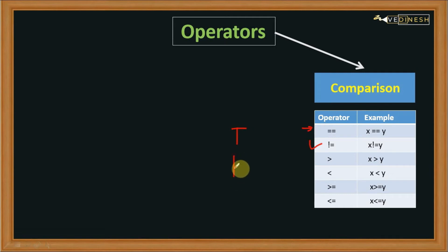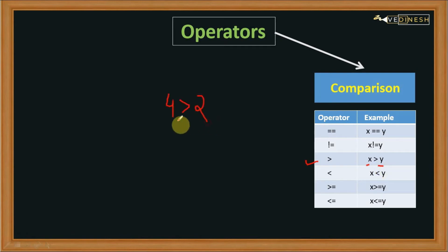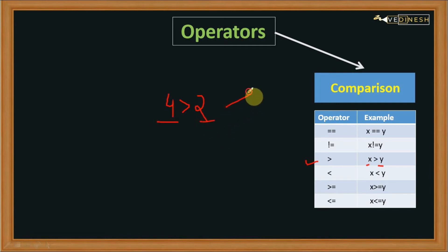The next operator is greater than. It compares the value on the left hand side to the value on the right hand side. If the value on the left hand side is greater than the right hand side, then it will return true, otherwise it will return false.